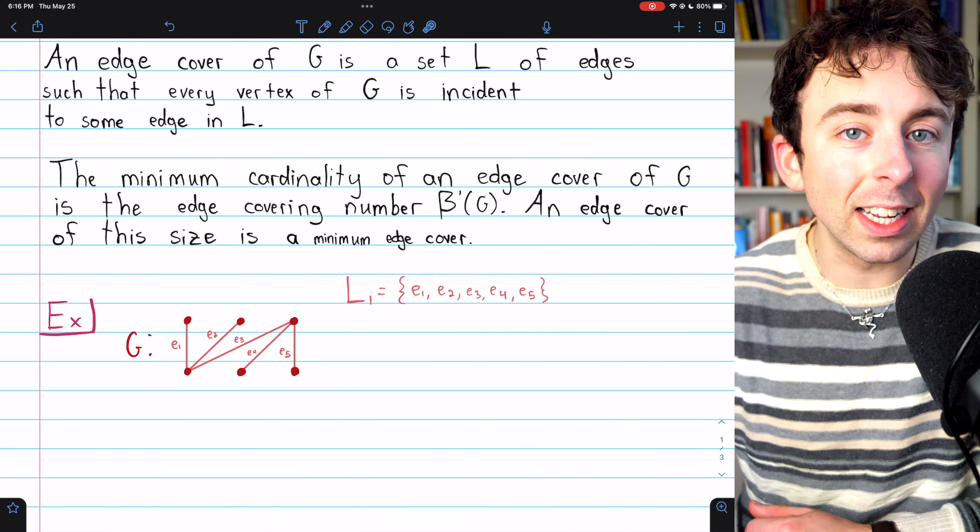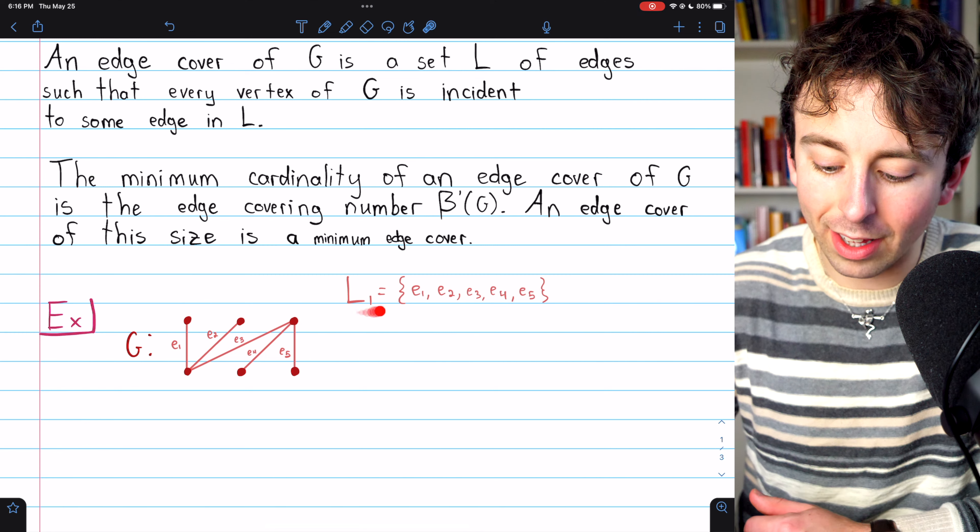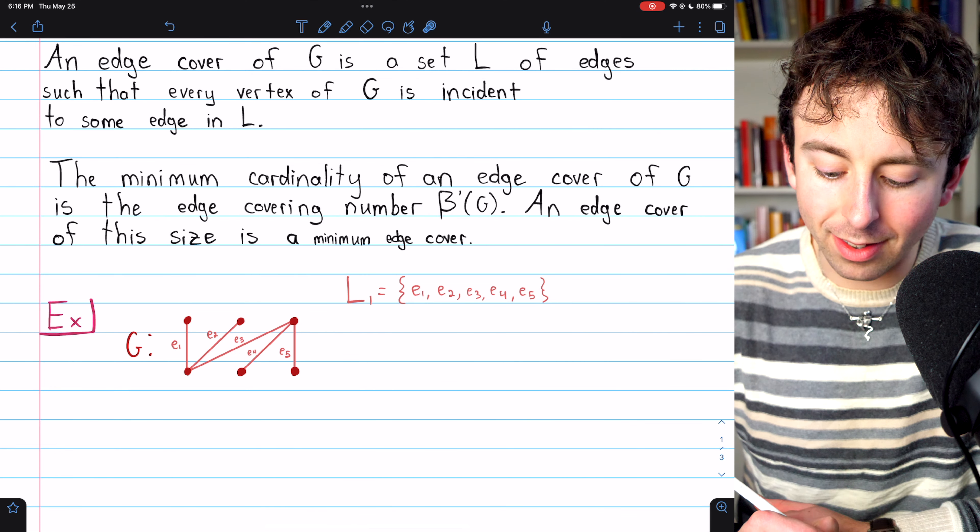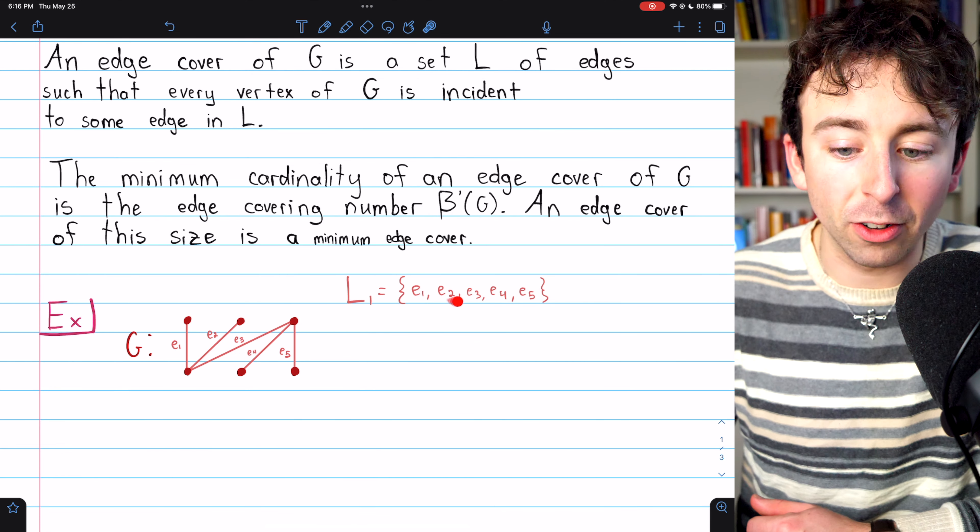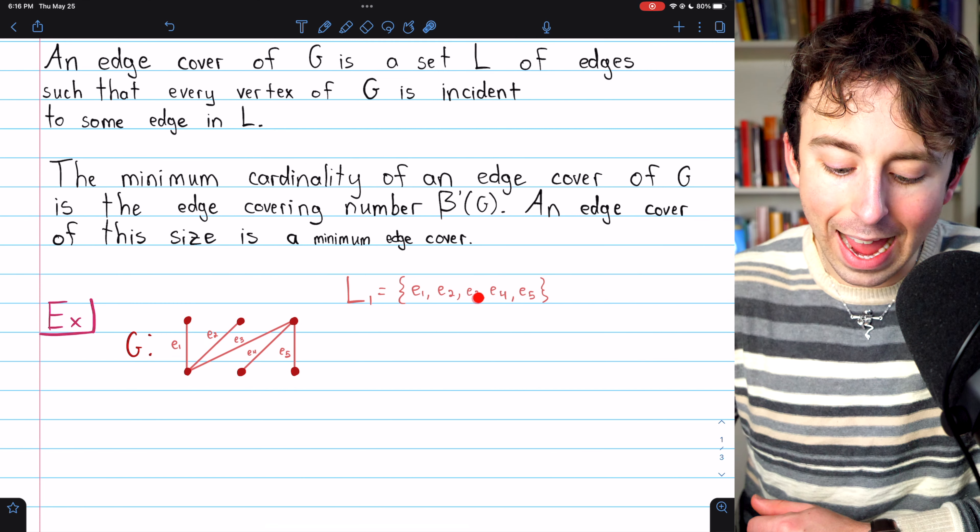this vertex here is incident to at least one edge in the cover. It happens to be incident to three edges, actually, E1, E2, and E3.